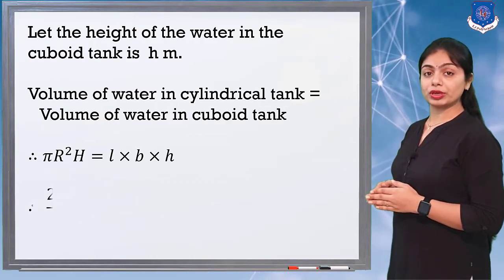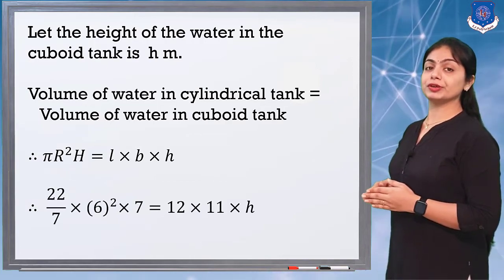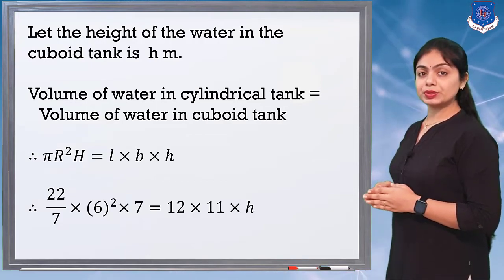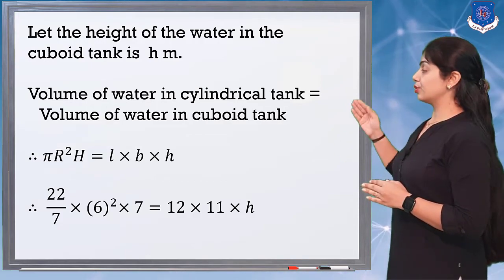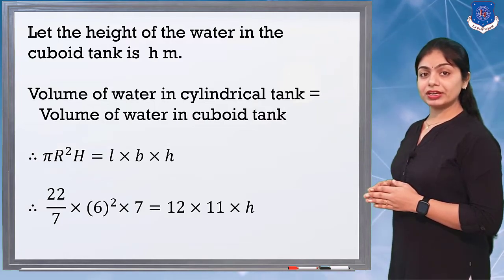Now we substitute the values: (22/7) × (6)² × 7 = 12 × 11 × h